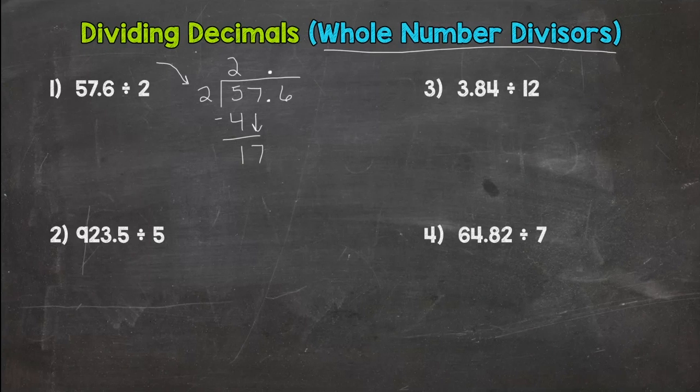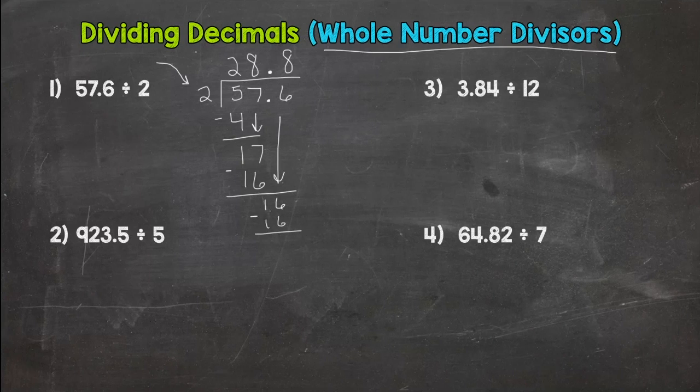Seventeen divided by two. How many groups of two in 17? Eight. Eight times two is 16. Subtract, we get one. Bring down my six. And then end up with 16 divided by two, which is eight. Eight times two is 16. 16 subtract, you get zero. So our quotient or answer would be 28 and eight tenths. So, same process. Just make sure you're placing the decimal in your answer.